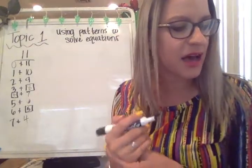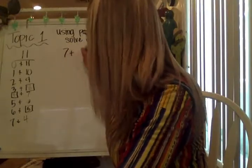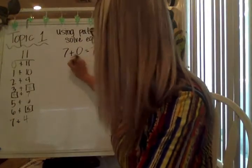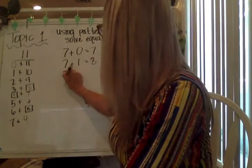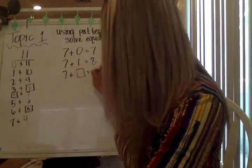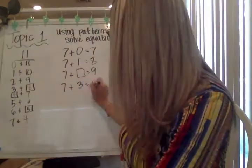You might see some, and mostly like that's kind of what it is, but you might see some that are written like this, like seven plus zero equals seven. Seven plus one equals what? Eight. Seven plus something equals nine. Seven plus three equals ten.